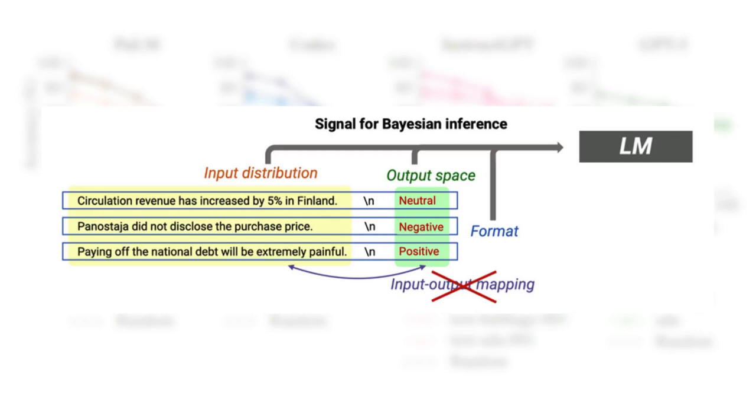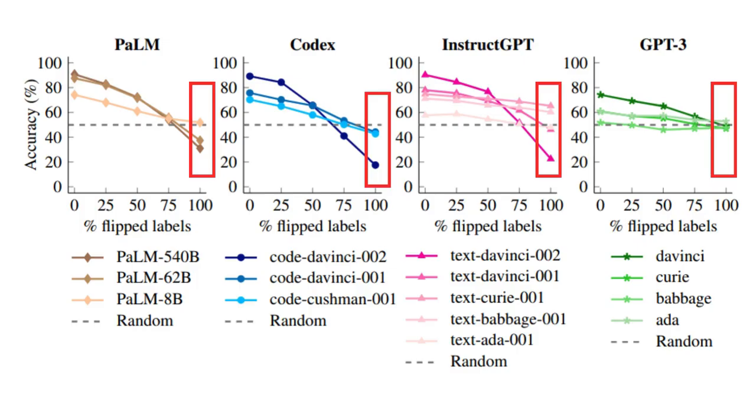As we've seen previously, this result is a bit weird because it contradicts what we've learned in the Bayesian framework, where the input-output mapping wasn't that important. It seems like the largest models are learning to stop following what their pre-training data distribution is telling them about that latent concept.